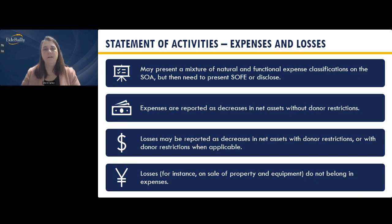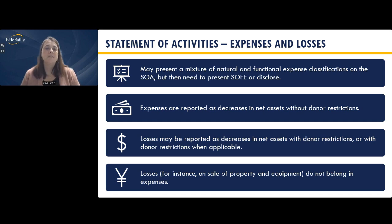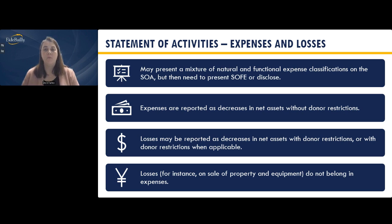For expenses and losses on the statement of activities: you can present a mixture of natural and functional expense classifications, but you still must present the statement of functional expenses or disclose it. Expenses are reported only as decreases in net assets without donor restrictions — you would never see expenses in the with donor restrictions column. The release of restrictions reduces restricted amounts through 'release from restrictions,' not on the expense side. Losses may be reported as decreases with or without donor restrictions as applicable. Losses from property and equipment don't belong in expenses — those belong on the statement of activities.